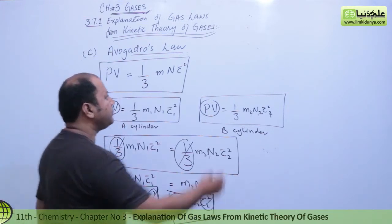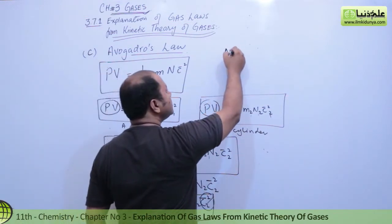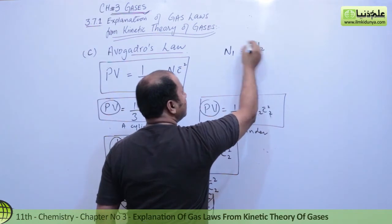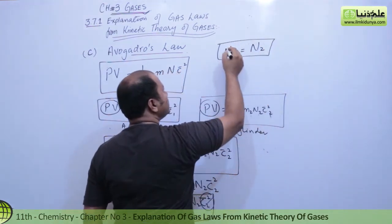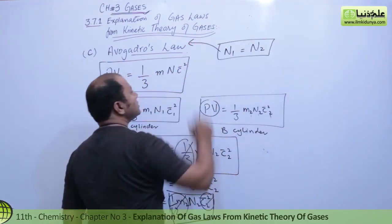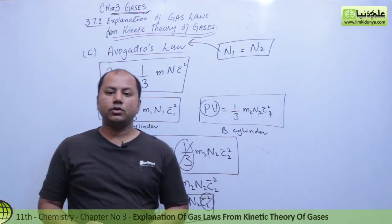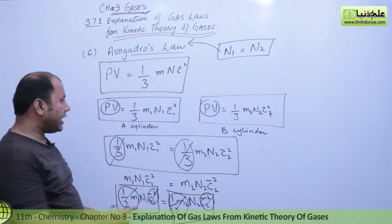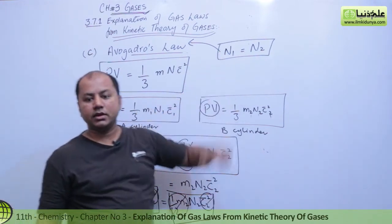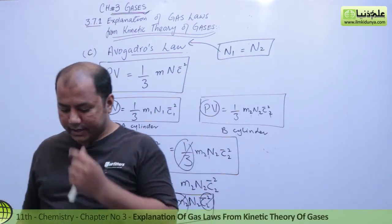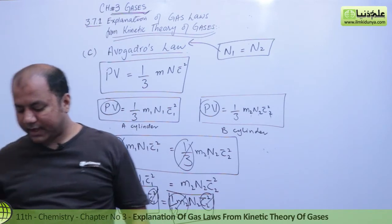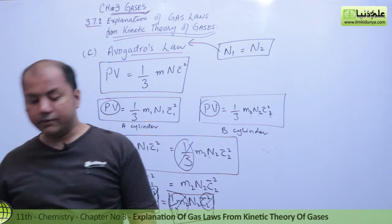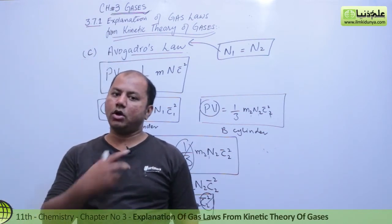After cancellation, we get N₁ = N₂. That is, the number of molecules in cylinder 1 equals the number of molecules in cylinder 2. Hence, equal volumes of all gases at the same temperature and pressure contain equal number of molecules, which is known as Avogadro's Law.